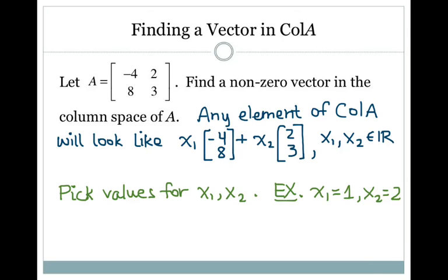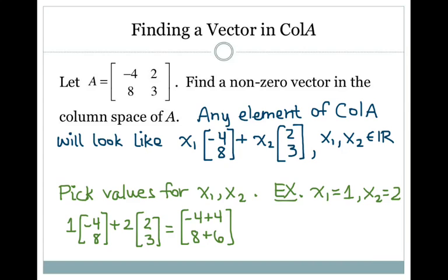I picked x1 equals 1 and x2 equals 2, so I'm going to do 1 times column 1 plus 2 times column 2, and work that out: negative 4 plus 4, 8 plus 6. I get the vector 0, 14, and that vector is in the column space of A because it's a linear combination of the columns of A. Any time you're asked to find a vector in the column space of A, just pick scalars, multiply them by the columns, and add your combinations together.